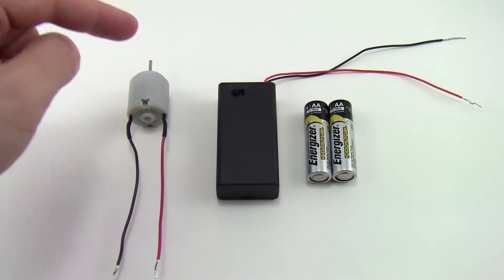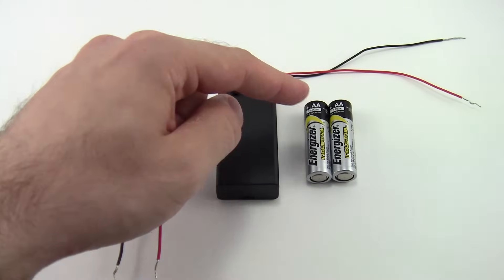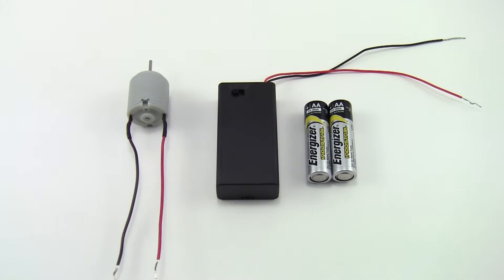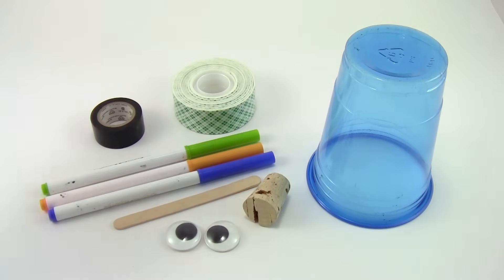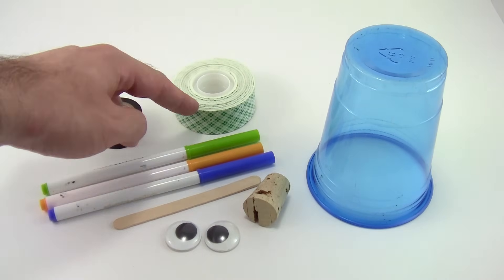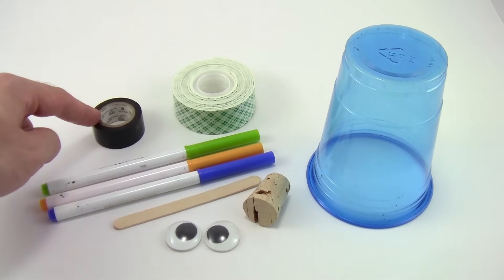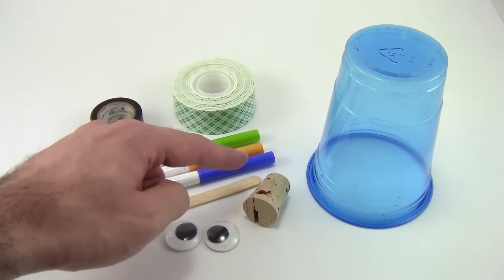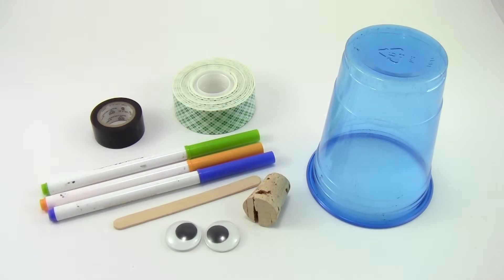To build an ArtBot, you will need a motor, battery pack, and two AA batteries, available in a kit from Science Buddies. You will also need a plastic cup, markers, double-sided foam tape, electrical tape or duct tape, a popsicle stick, a cork, and optional decorations like googly eyes.